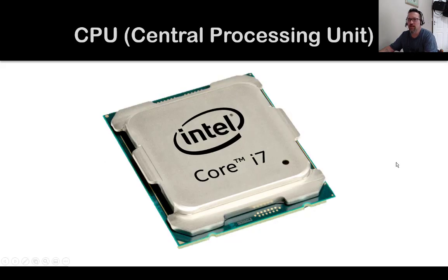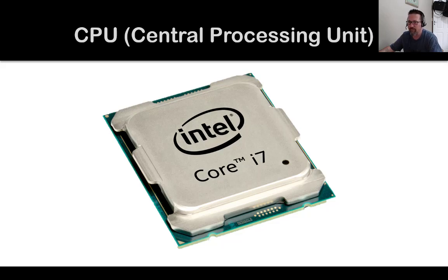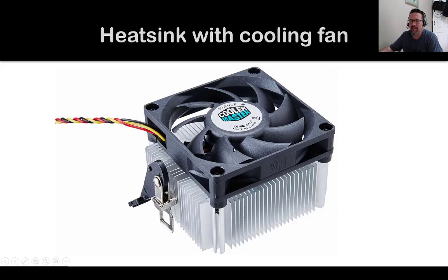Then we have the CPU — the central processing unit. The CPU is what a lot of people refer to as the brain of the computer. It does all of the calculations; it's like a really super fast calculator. It also processes instructions — when we provide the computer with instructions and tell it to do something, the processor executes that instruction to the relevant parts of the system.